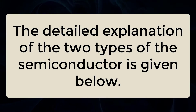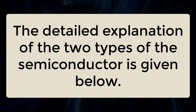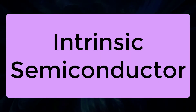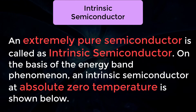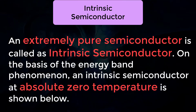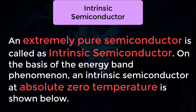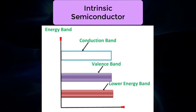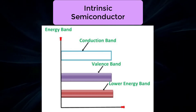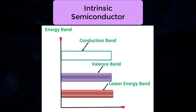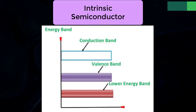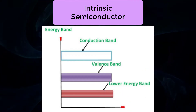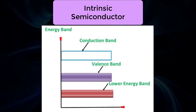A detailed explanation of the two types of semiconductors follows. An extremely pure semiconductor is called an intrinsic semiconductor. On the basis of the energy band phenomenon, an intrinsic semiconductor at absolute zero temperature has its valence band completely filled and the conduction band completely empty. When the temperature is raised and some heat energy is supplied, some of the valence electrons are lifted to the conduction band, leaving behind holes in the valence band.